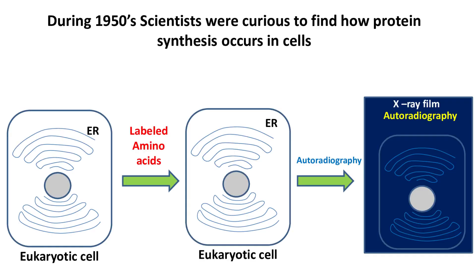During the 1950s, scientists were curious to find how protein synthesis occurs in cells. This was the time when there was no information regarding tRNA, mRNA, and other components involved in protein synthesis.